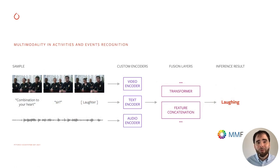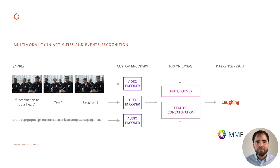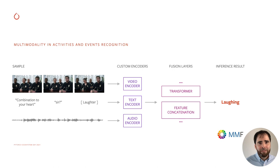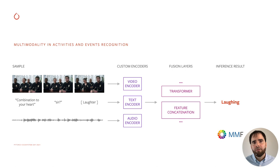Another challenging case is the recognition of activities and events. The nature of those activities and events are different than the ones in academic datasets — for example, our activities and events taxonomy includes terms like 'apology', 'loathing', or 'babysitting'. Given the taxonomy and our scope, it was a natural fit to think in multimodality for this problem. Using PyTorch's multimodal framework, we pass an image sequence, closed captioning, and audio information through custom encoders, and afterwards we fuse the output of the encoders to infer a result. This is currently work in progress, and we are experimenting in the fusion layers with transformers as well as feature concatenation.